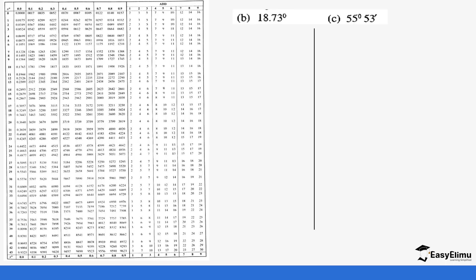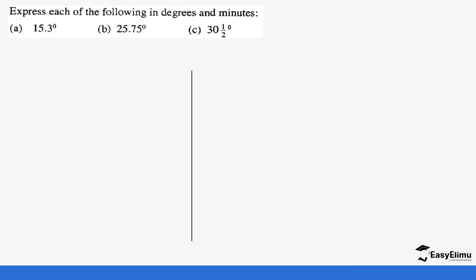You can also be told to express each of the following in degrees and minutes. So we are going to express this in degrees and minutes and then we are also going to get a chance to check that. Remember we said one degree equals 60 minutes. So we have 15 degrees 15.3 degrees, so this decimal which is 0.3 degrees is what you want to convert to minutes.